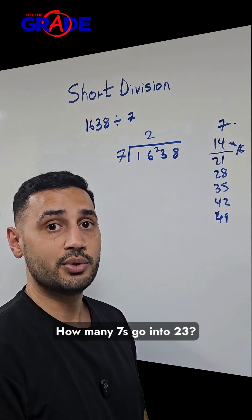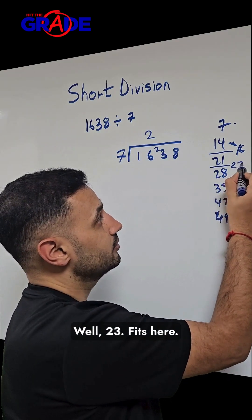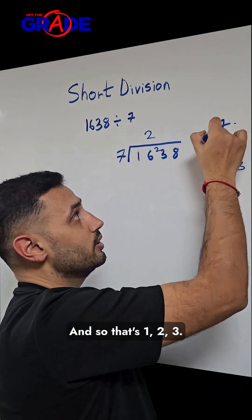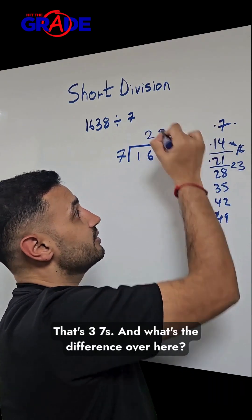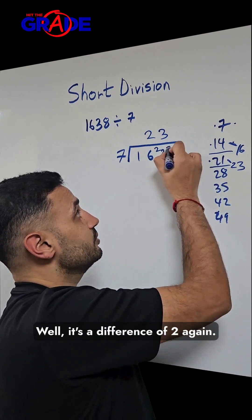How many 7s go into 23? Well, 23 fits here. And so that's 1, 2, 3. That's 3 sevens. And what's the difference over here? Well, it's the difference of 2 again.